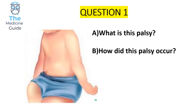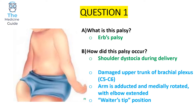This is our very first question — you can either pause the screen or wait 10 seconds when we'll go through the answer. This is an example of Erb's palsy, which classically presents after shoulder dystocia during delivery. It involves damage to the upper trunk of the brachial plexus, specifically C5 and C6. The arm is adducted, medially rotated, and the elbow extended — classically known as the waiter's tip position.